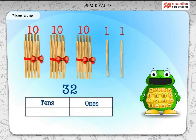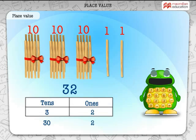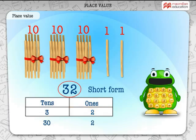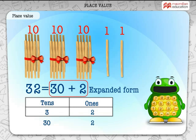The place value of 3 in 32 is 3 tens or 30. The place value of 2 in 32 is 2 ones or 2. 32 is the short form of the number. 32 is equal to 3 tens and 2 ones, or 32 is equal to 30 plus 2. And this is the expanded form of the number.